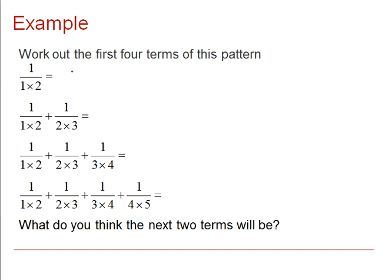Let's start by looking at this example. The first four terms of this pattern, 1 over 1 times 2, would give us a half. If we continue the pattern, we see that we get a half plus a sixth, which adds to 4 sixths, which can be cancelled down to 2 thirds, 2 over 3.